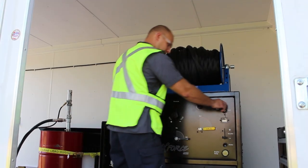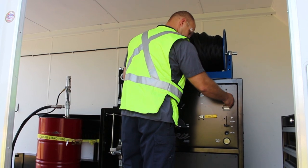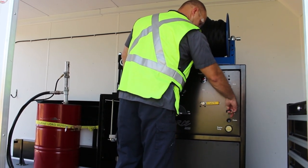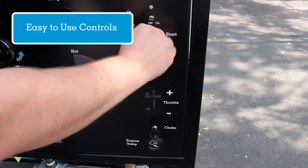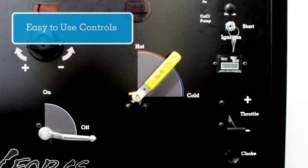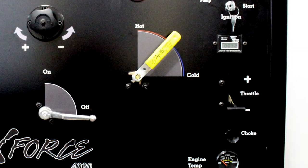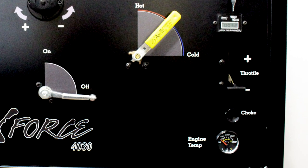The Max Force is very intuitive and easy to use. The control panel has all the controls at your fingertips. The engine's electric heat ignition, choke, throttle, hour meter, tachometer, and engine cooling gauge are all located together.